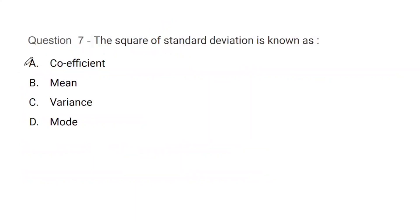Question number 7: The square of the standard deviation is what - coefficient, mean, variance, or mode? The correct answer is C, that is variance.